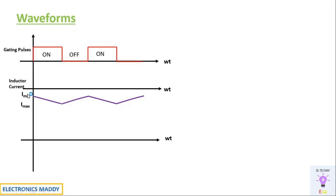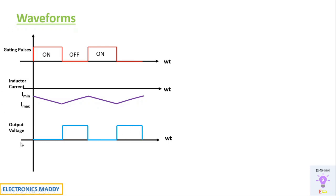This is the nature of the inductor current, also referred to as the load current since the same current flows through the load. For the output voltage: when the switch is on, Vout equals zero; when the switch is off, Vout has a value of E plus VL. This pattern repeats each switching cycle.